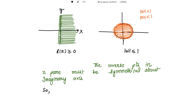If I take one point here, let's say alpha, the inverse point will be the conjugate point with a negative sign, lying in the second quadrant. So the inverse points in the z-plane must be symmetrical about the imaginary axis Re(z) = 0. The inverse points are -b/a and -d/c. Writing -b/a as alpha and -d/c as negative alpha-bar, let's put these values back into the original transformation.